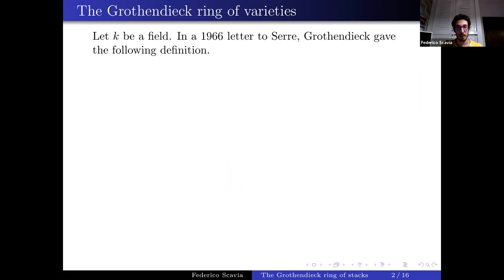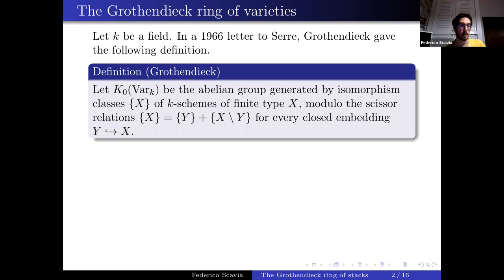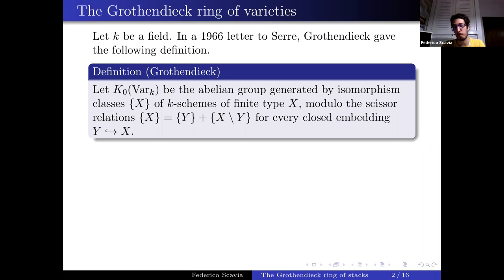The Grothendieck ring of varieties is a classical definition given by Grothendieck in the 60s. I denote it by K0 Var over k, where k is the base field. By definition it is the abelian group generated by isomorphism classes of k-schemes of finite type, modulo scissor relations. These relations tell us that the class of any X can be written as the class of Y plus the class of the complement of Y, whenever Y is a closed subscheme of X.